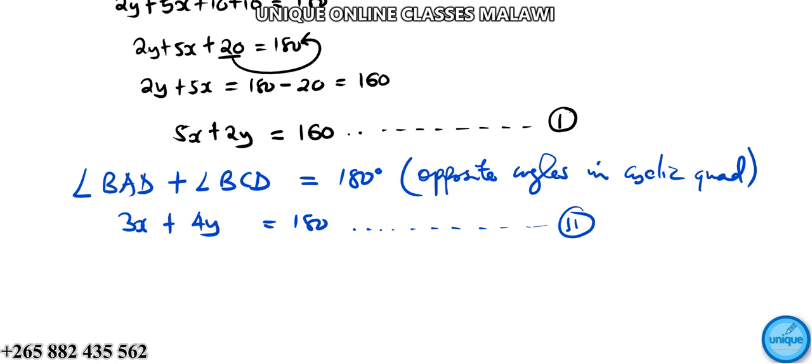Now we can solve these equations simultaneously. The best way is to solve by elimination. We have 3x plus 4y equals 180, and 5x plus 2y equals 160.